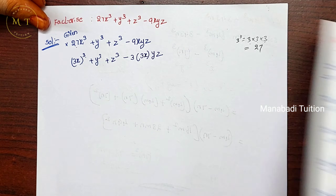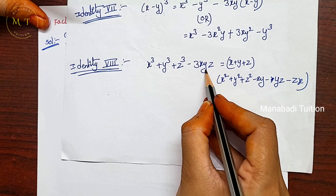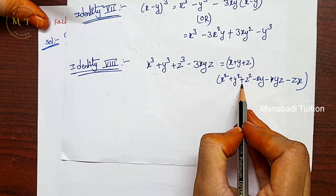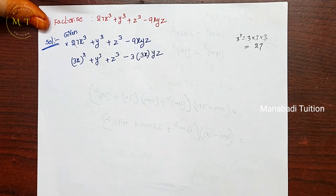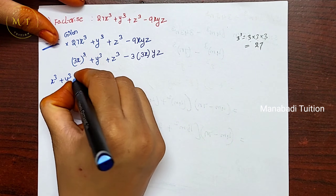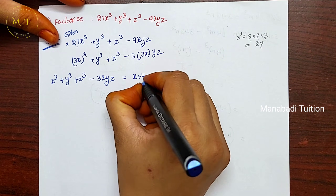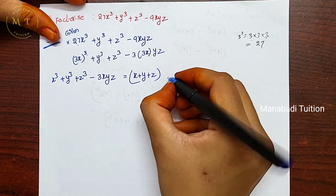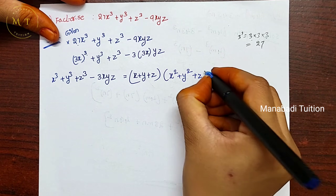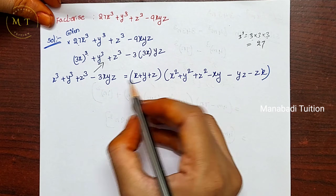We use Identity 8: x³ + y³ + z³ - 3xyz = (x + y + z)(x² + y² + z² - xy - yz - zx). This is the identity model we will apply.